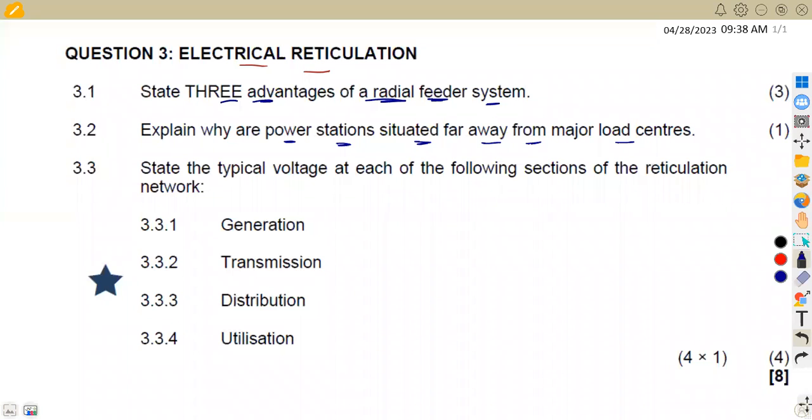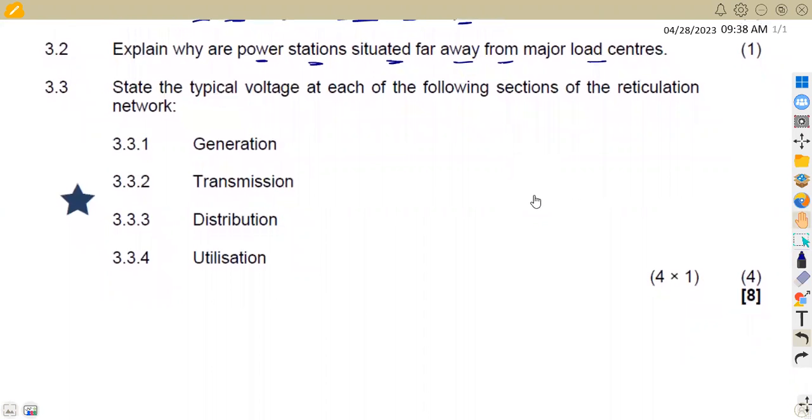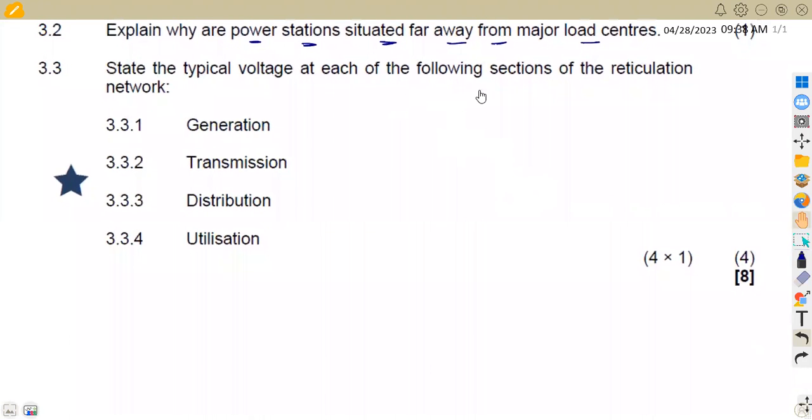Let's check the other part of the question. We are given now to state the typical voltage at each of the following sections of the reticulation network. We are given a series of networks. From these reticulation networks that we have, what are the type of voltages that we have in each section?